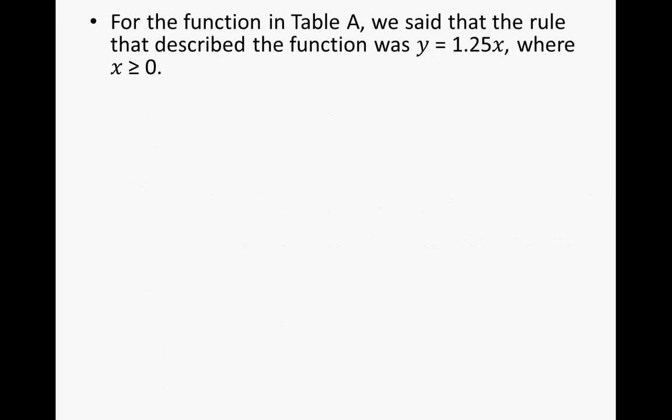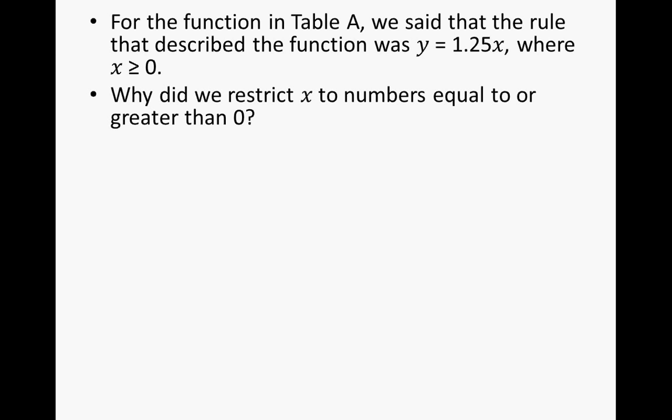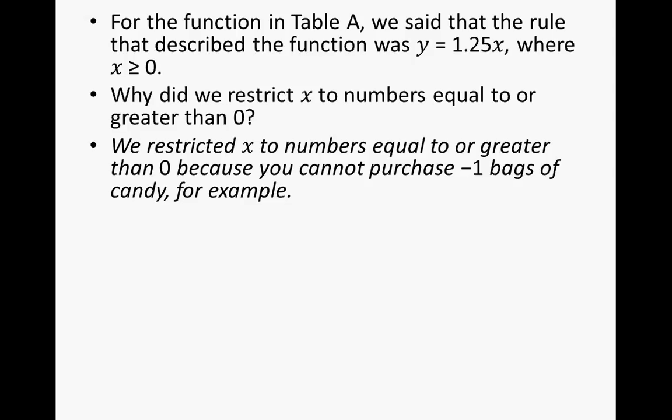For the function in table A, we said that the rule that described the function was y equals 1.25 times x, where x was greater than or equal to zero. Why did we restrict x to numbers equal to or greater than zero? Well, we restricted x to numbers equal or greater than zero because you cannot purchase negative 1 bags of candy, for example.